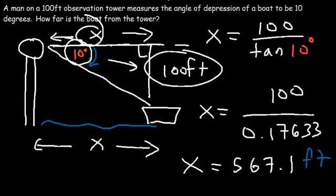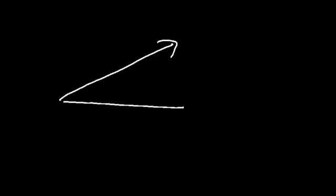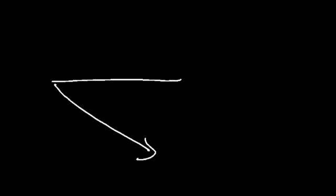To review: when dealing with angle of elevation problems, the angle is above the horizontal line. For angle of depression problems, the angle is below the horizontal line. Remember that whenever you're solving these types of word problems. That's it for this video — thanks for watching, and have a great day.